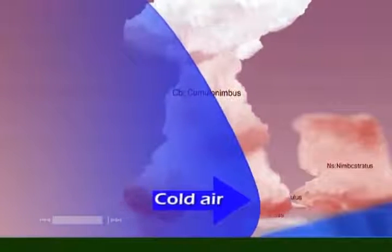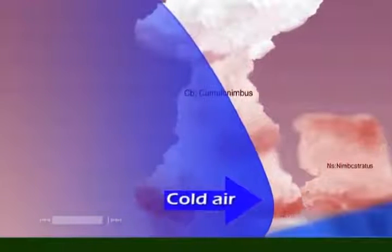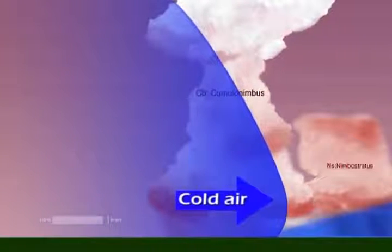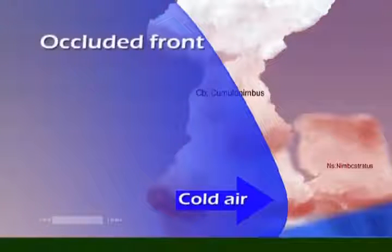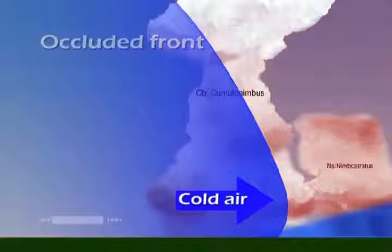When a cold front catches up with a warm front, it is called an occluded front. After the cold front moves away, the sky clears up.